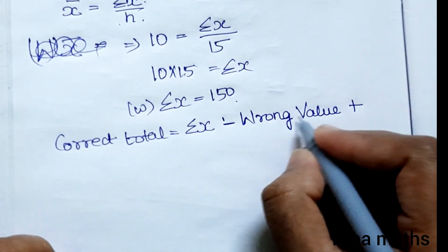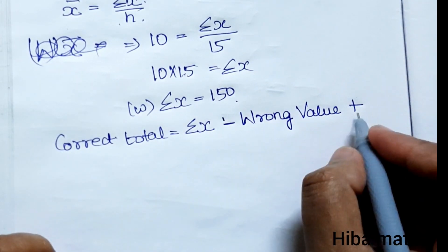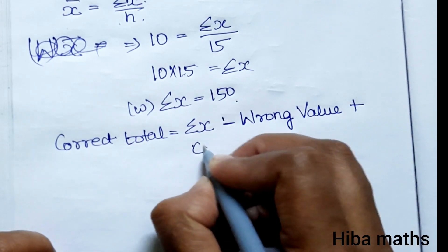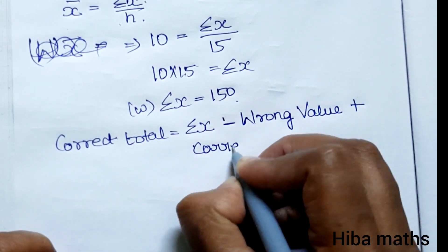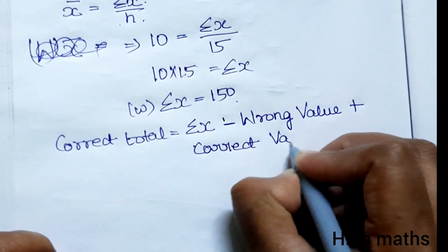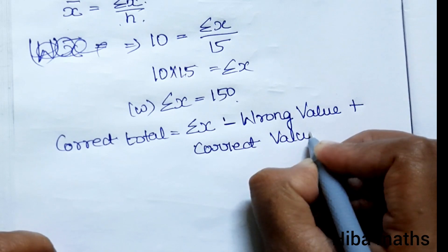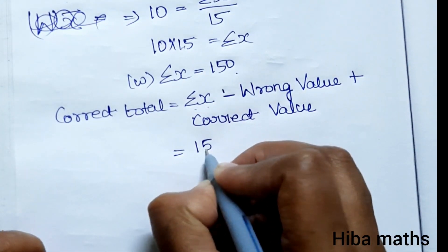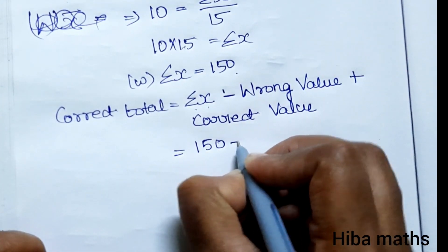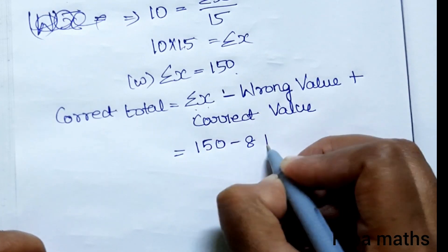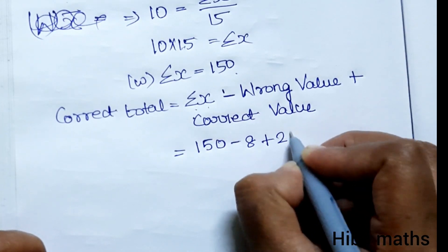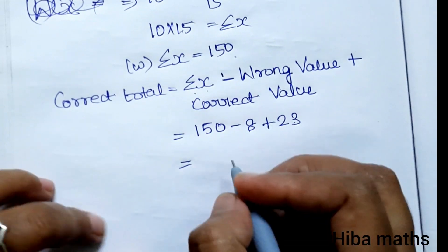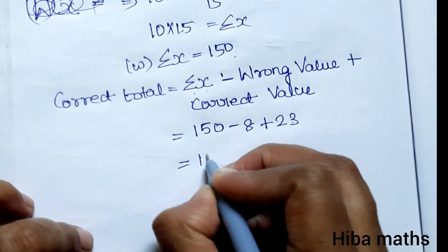The wrong observation value is 8 and the correct observation value is 23. To find the correct sum, we take the wrong total and subtract the wrong value, then add the correct value: 150 minus 8 plus 23, which gives 15 added to 150.